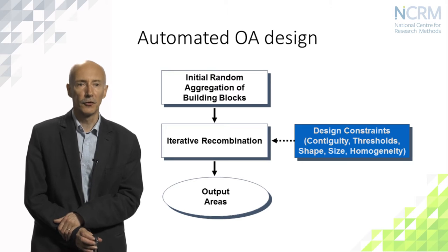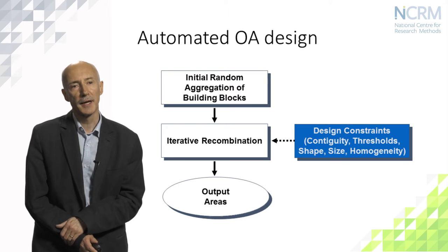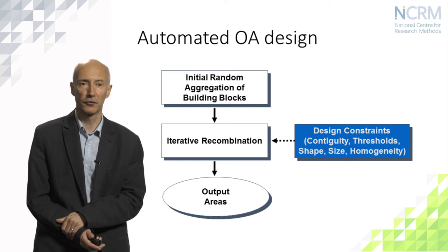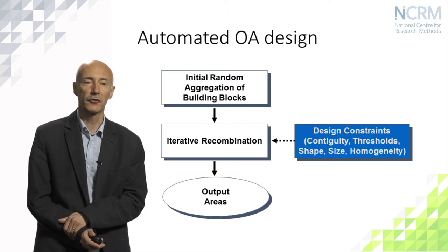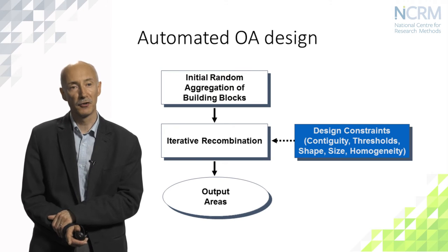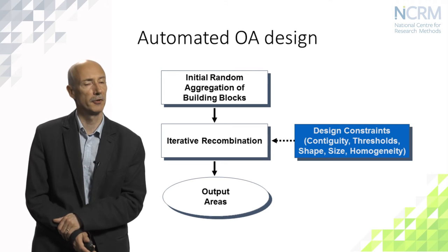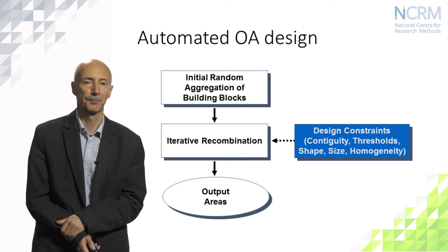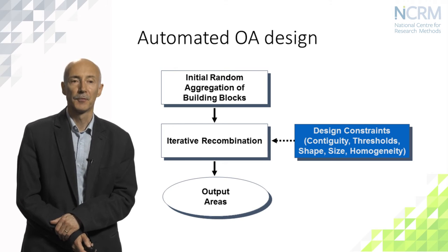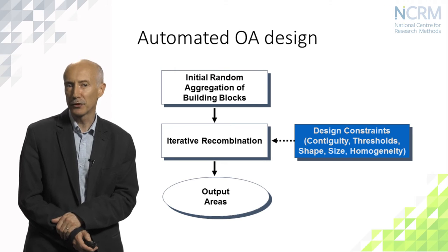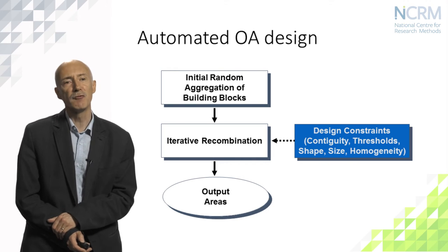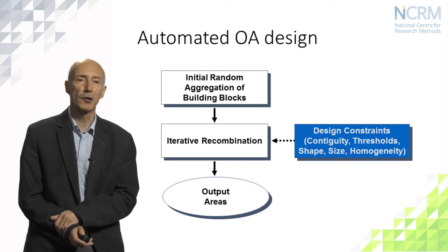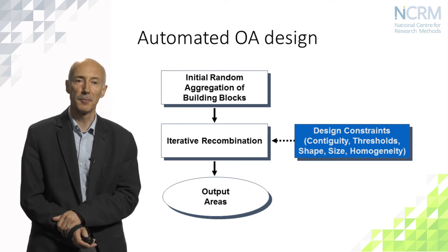Having specified building blocks and design constraints, we run an initial random aggregation, measure each constraint at the first iteration, then enter the swapping process — evaluating each possible swap to see whether design constraints are improved or worsened. Broadly, we keep improving moves and reject non-improving ones, eventually creating output areas that are the best achievable given the number of iterations adopted. What we often find is a rapid improvement in solution quality that gradually plateaus until very many moves make no further improvement.